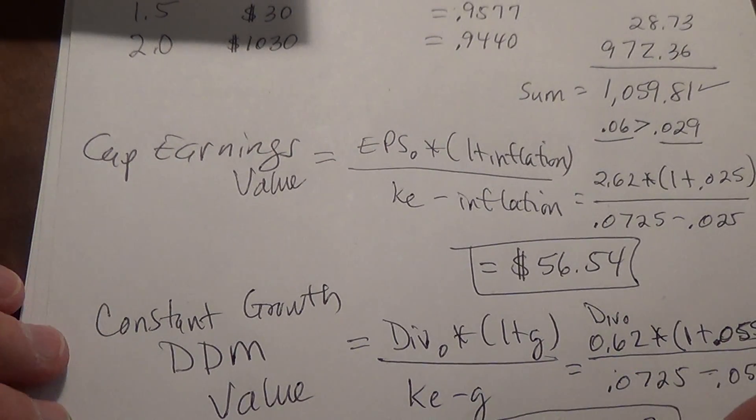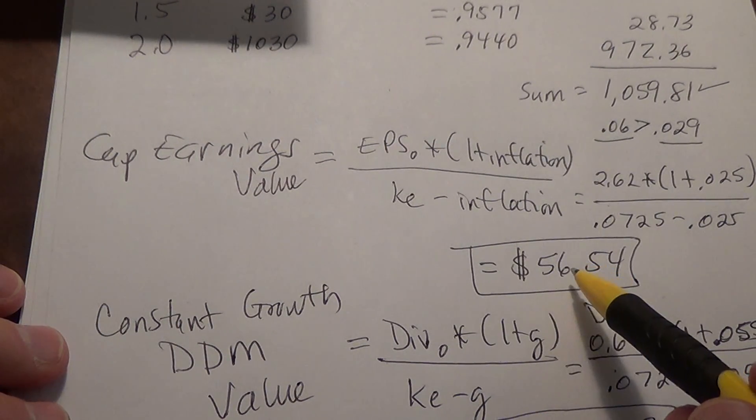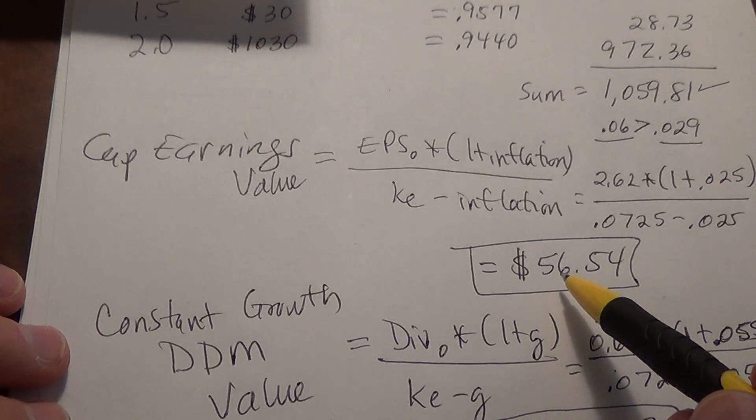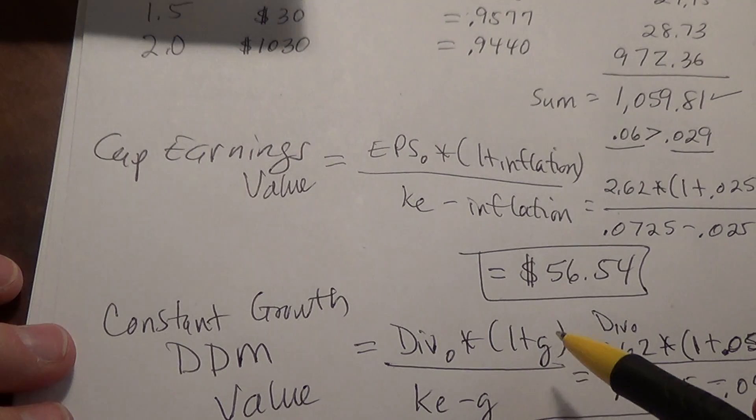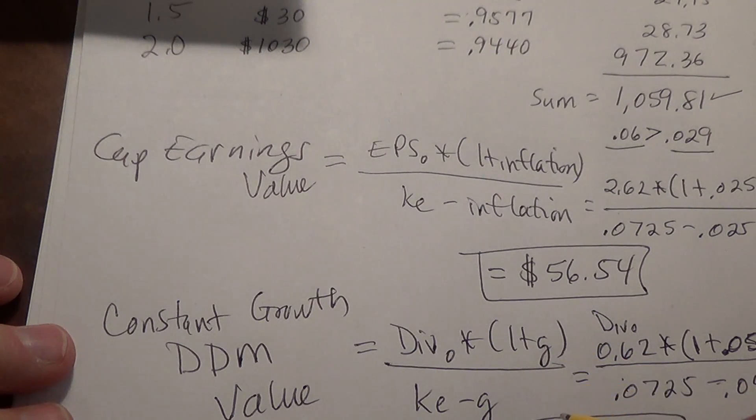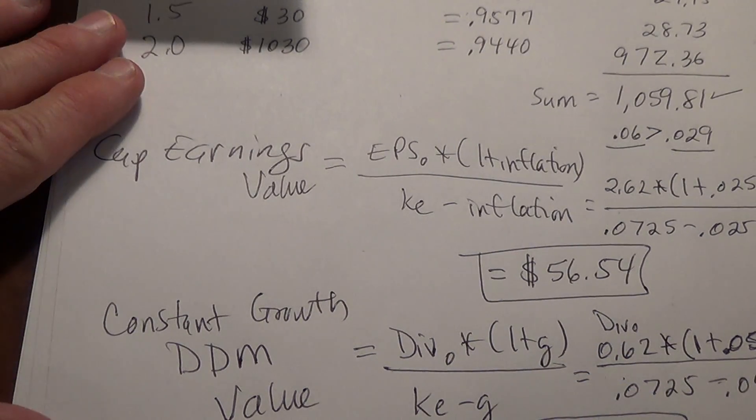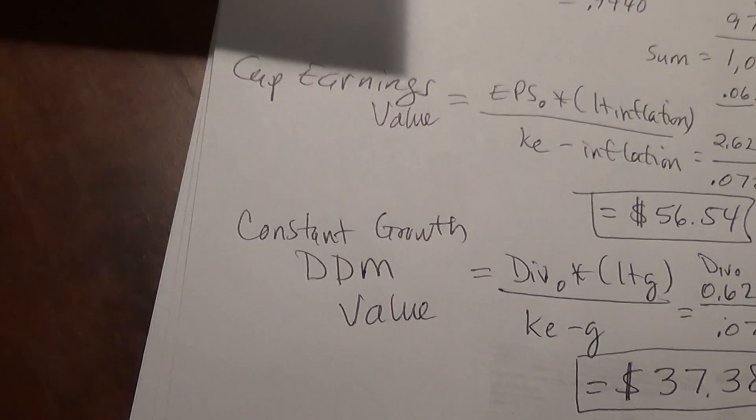It should be rare for the DDM to give you a lower number than the capitalized earnings model, but that's more frequent today because firms are paying out much lower payout ratios than they have in the past, so it's actually giving us a lower number this time.